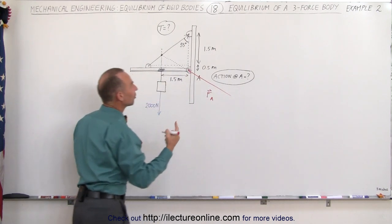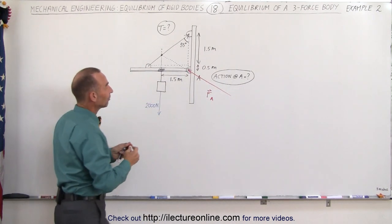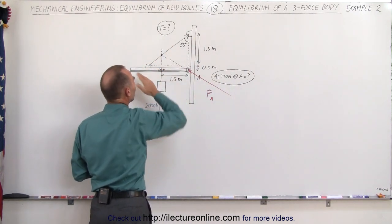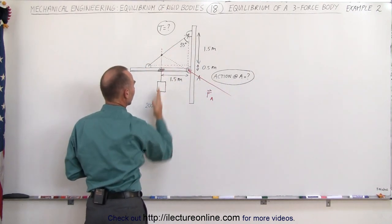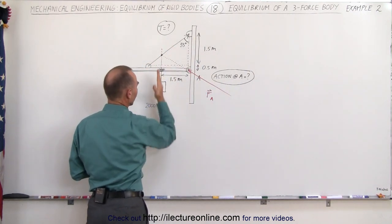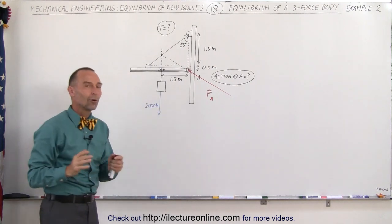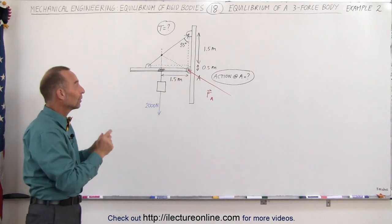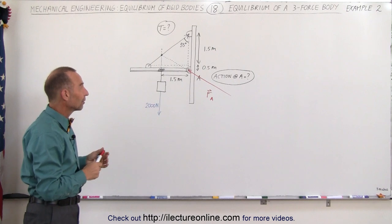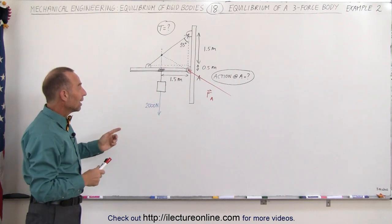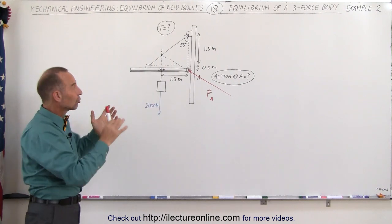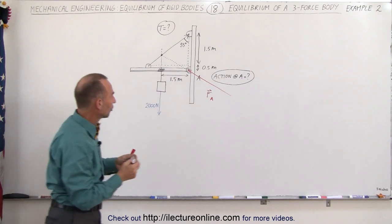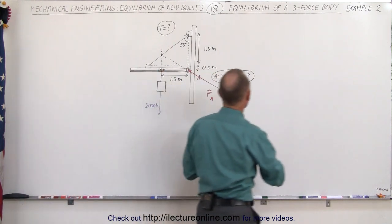Now I have the direction of all three forces: the direction of the force at A, the direction of the tension, and the direction of the weight — the 2,000 newtons. Of course, only graphically at this point; I don't actually know the actual angles yet. I can however at least graphically draw the triangle of those three forces, so let's go ahead and do that.